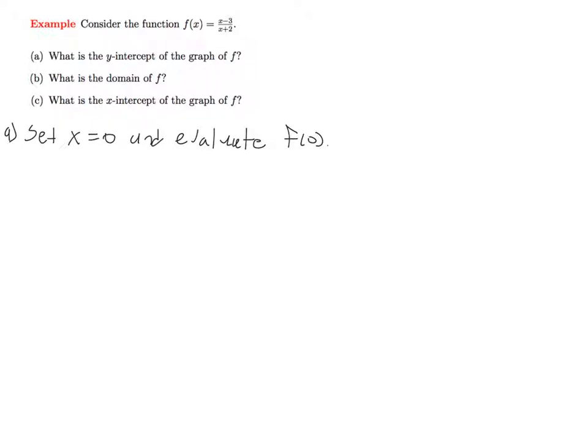So it's no different with a rational function than it was for any other function. So in this case, we have f of 0 is equal to 0 minus 3 over 0 plus 2. So this gives us minus 3 over 2. So we have 1 y-intercept at the point 0, minus 3 halves. So that answers part A.